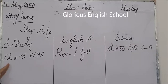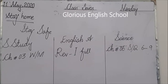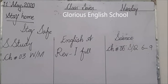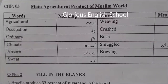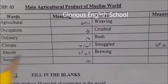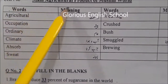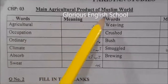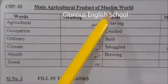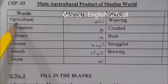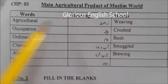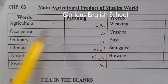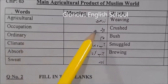Today we will explain the word meanings. Now open your notes. Chapter number 3 is main agricultural products of the Muslim world. The first word is agriculture, meaning zaraat. Occupation means pesha.